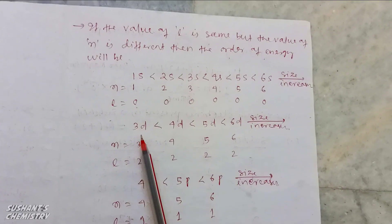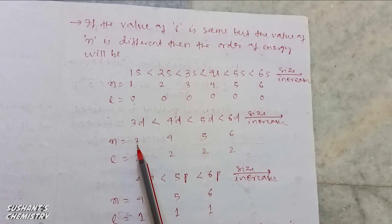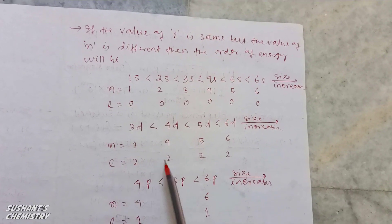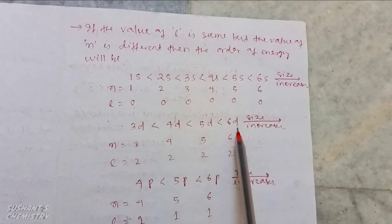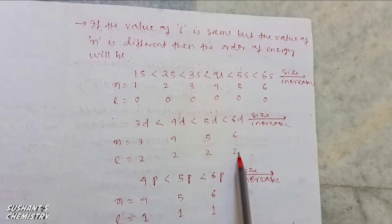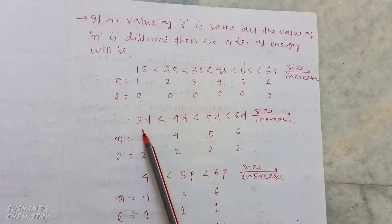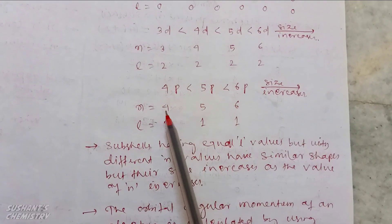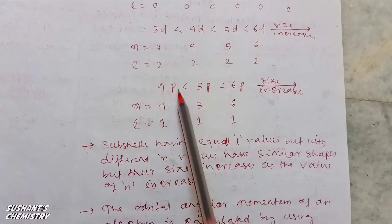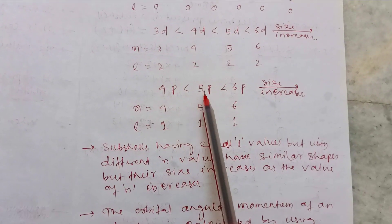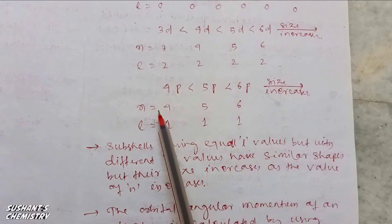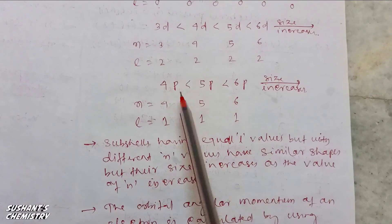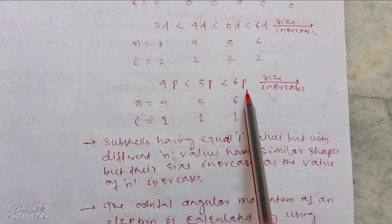Similarly, for 3d, 4d, 5d, and 6d sub-cells, the value of n gradually increases: 3d has n=3 l=2, 4d n=4 l=2, 5d n=5 l=2, 6d n=6 l=2. The value of l remains constant but n changes, meaning the size and energy of sub-cells gradually increase. Similarly, for 4p, 5p, and 6p sub-cells: 4p has n=4 l=1, 5p has n=5 l=1, 6p has n=6 l=1 — energy and size increase from 4p to 6p.